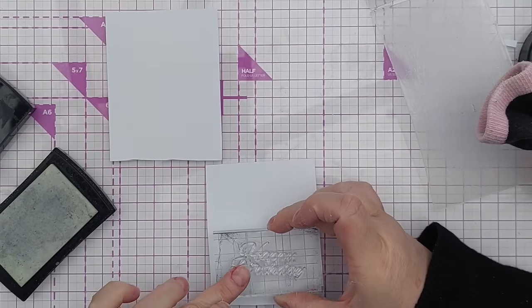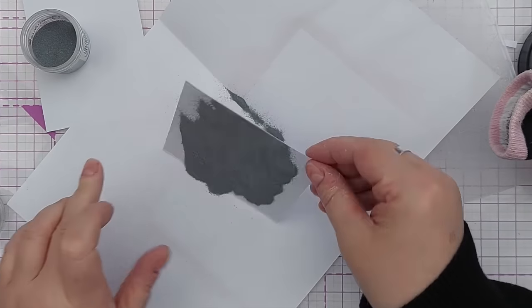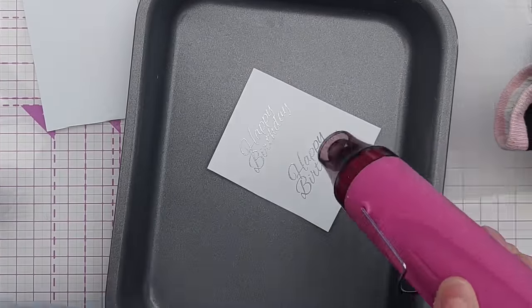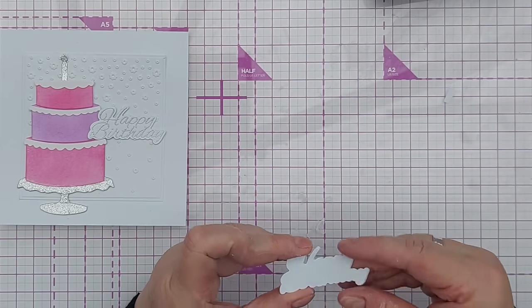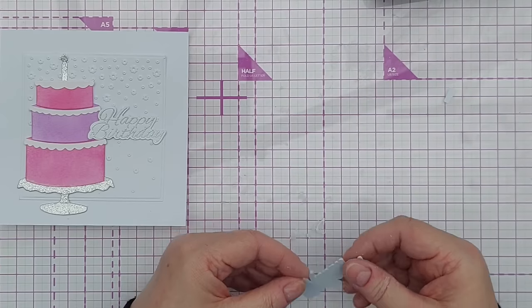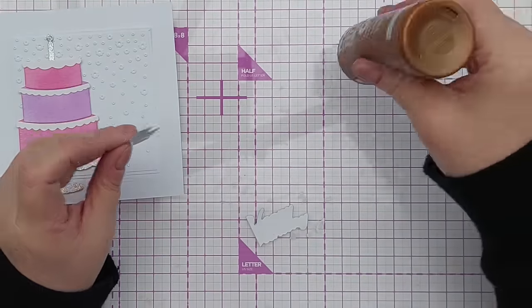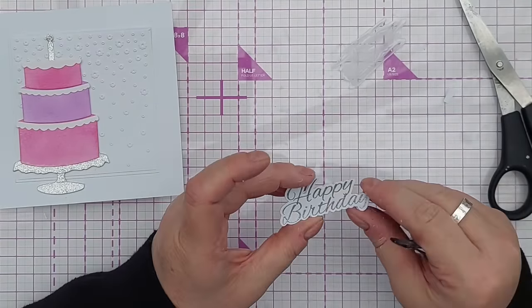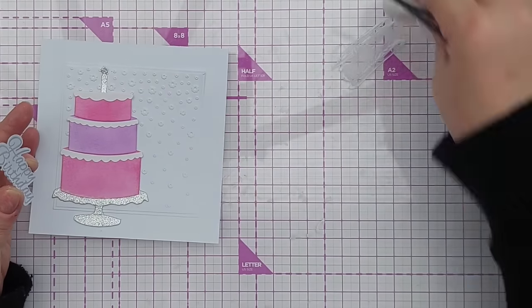For my sentiment I decided to stick with silver and I found a nice scripty happy birthday stamp. Stamped that in embossing ink and then heat embossed it in silver, and once that was done I cut it out using its coordinating die and added it to the front of the card. I did cut the shadow piece a couple more times out of white cardstock and layer them up before adding that to the back of my stamped sentiment piece. The reason I did that was because I wanted the sentiment to overlap the cake slightly so I needed to add some extra card to the back of the sentiment to keep it level and stop it flapping around.